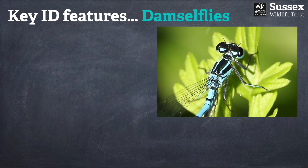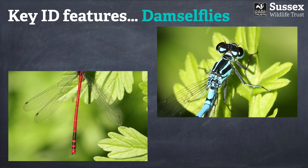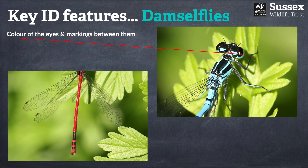Moving on to some key identification features of damselflies — it's worth noting that lots of these are shared characteristics with dragonflies. It is again well worth looking at the colour of the eyes, which can be a really useful feature in damselflies, perhaps even more so than in dragonflies. It's also worth looking at the markings between the eyes. In the case of this azure damselfly on the right, you can see it has really distinct blotches between the eyes. Some species have additional markings between those markings — so you can end up with markings between markings, which actually sounds more complex than it is.